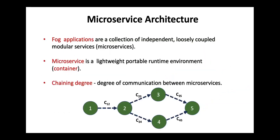What is a fog application? By adopting microservice architecture, fog applications are designed as a collection of independent and loosely coupled modular services called microservices. These microservices are installed in lightweight portable runtime environments called application containers. The figure below shows an example of a fog application consisting of five microservices. Directed edges indicate the direction of communication, and edge weight shows the amount of data flow between microservices, referred to as chaining degree.